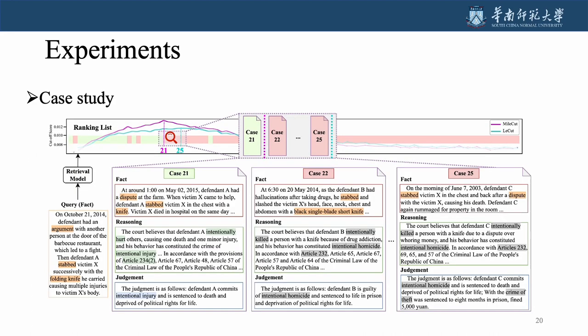Here we analyze a cutoff example. In this example, Myocut effectively captures the multiple features, leading to precise truncation results. That's all.